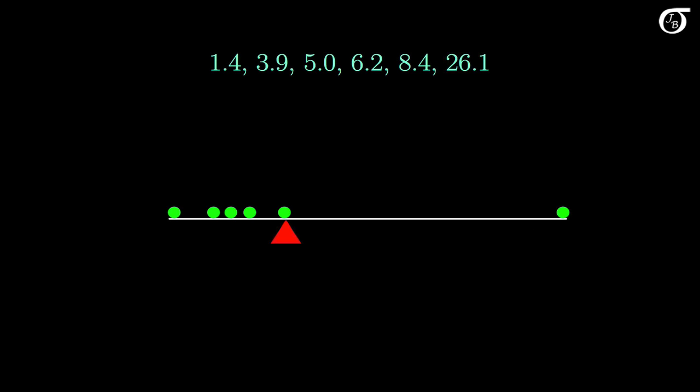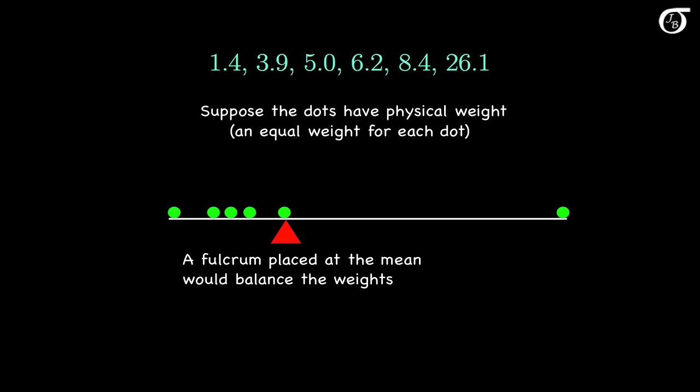To illustrate that another way, let's suppose these dots had physical weight, an equal weight for each dot, and they were resting on a stiff board of negligible weight. A fulcrum placed at the mean would balance the dots.